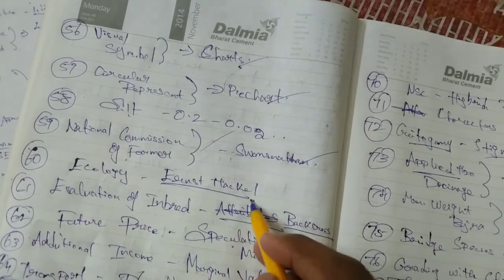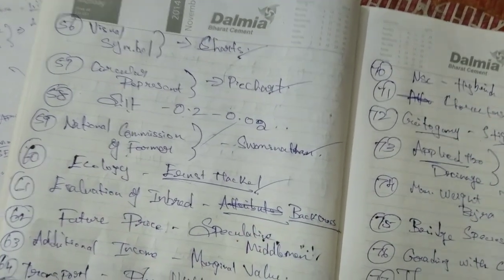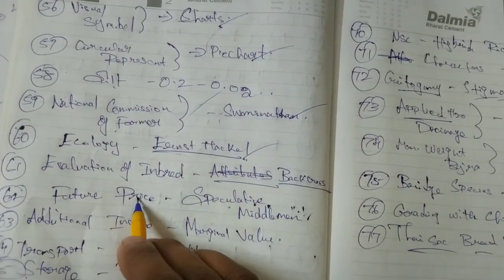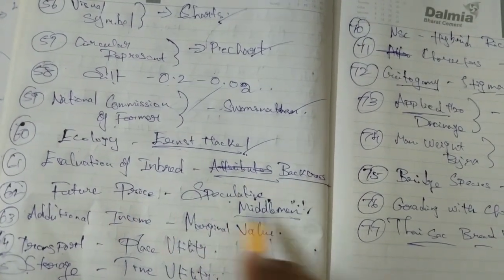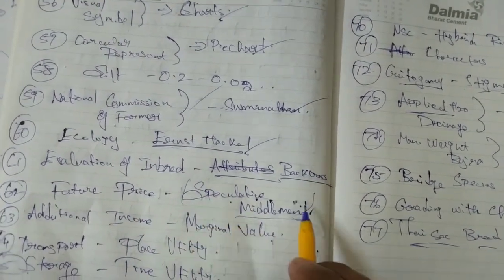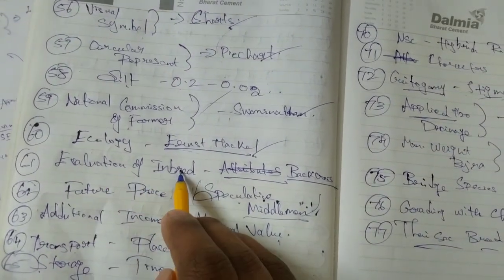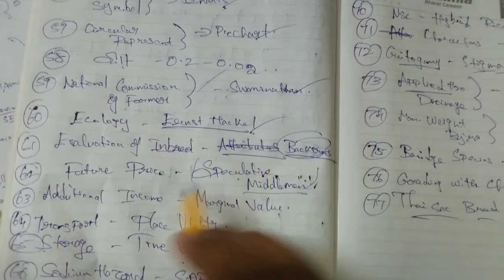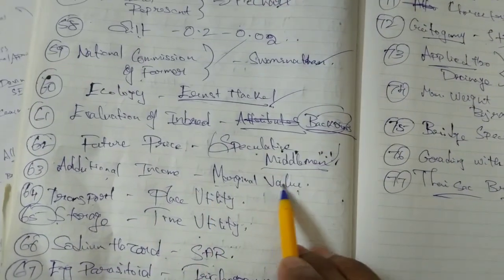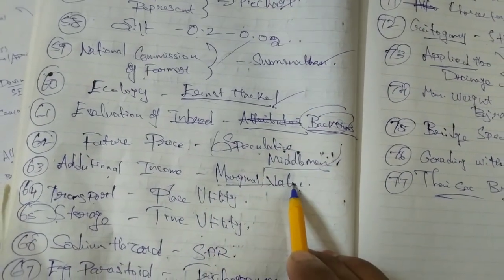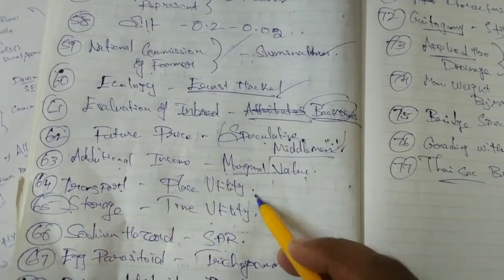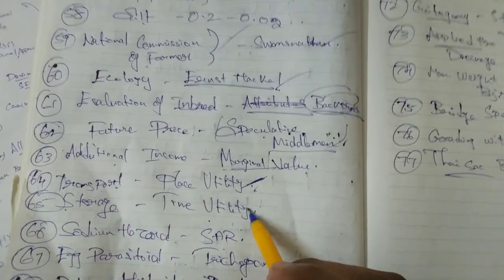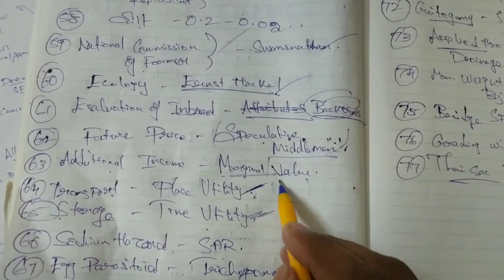This is the official Hour-Cash — is a repressor. Feud service price. The price price, spend the money. That's the evaluation of inbreed — we'll ensure the back cost. The additional income — the marginal value, it is a marginal value. Transport is a place utility. Transport is a time utility. Storage is a time utility.